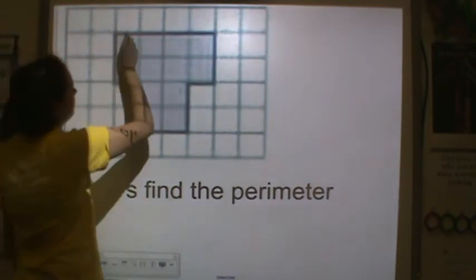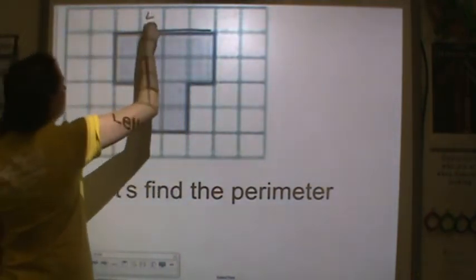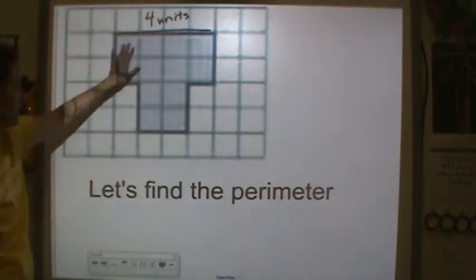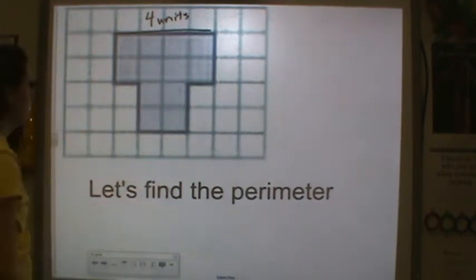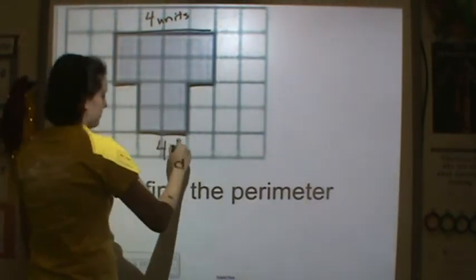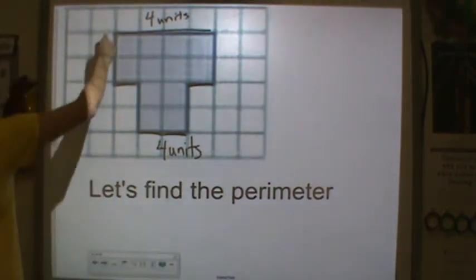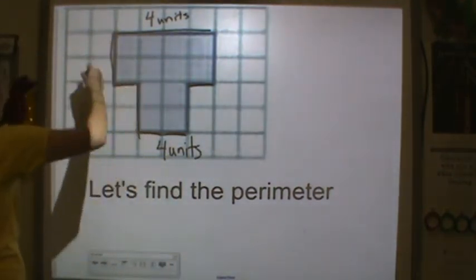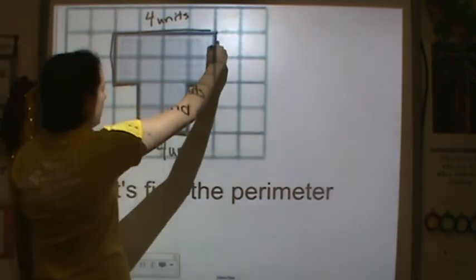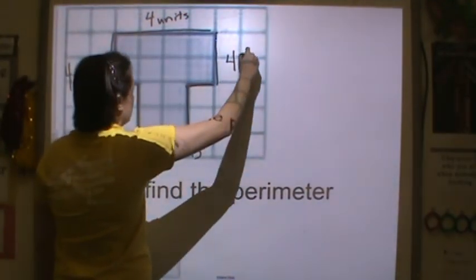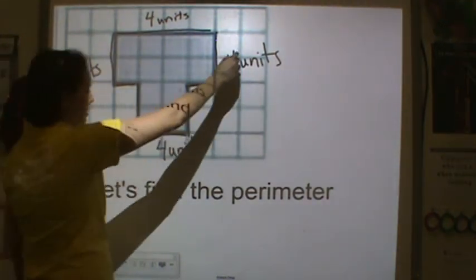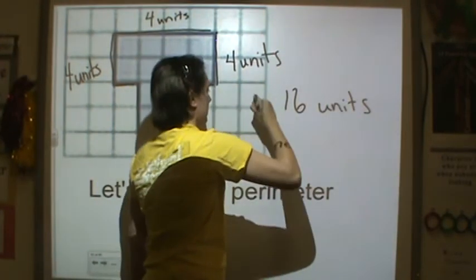Let's do this one. I have 1, 2, 3, 4 across the top. And remember, the bottom should be the same because I'm working with a shape that is square-like. So 1, 2, 3, 4 units across the bottom. I have 1, 2, 3, 4 for the width on this side, and I should have the same on the other side: 1, 2, 3, 4. So all together: 4, 8, 12, 16 units for the perimeter.